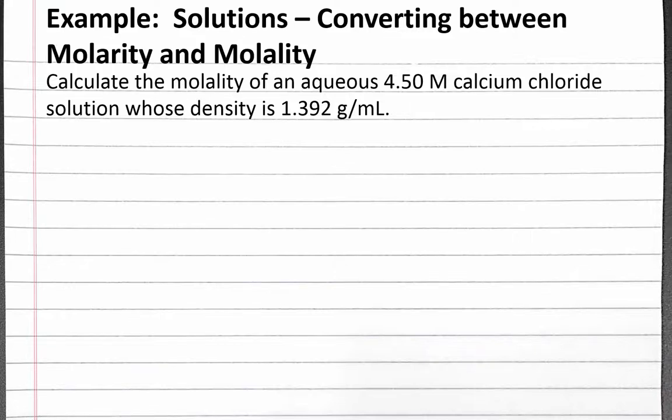In this example, we convert between concentration units of molarity and molality. Our problem reads: calculate the molality of an aqueous 4.5 molar calcium chloride solution whose density is 1.392 grams per milliliter.